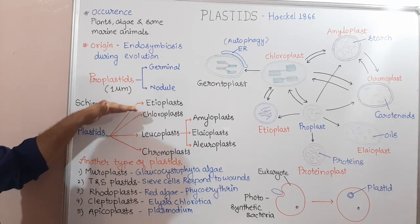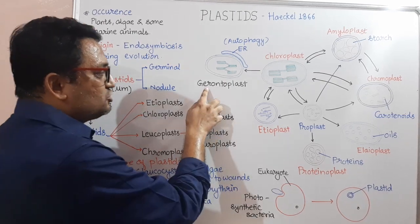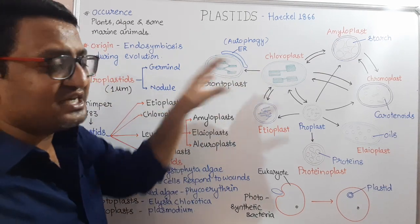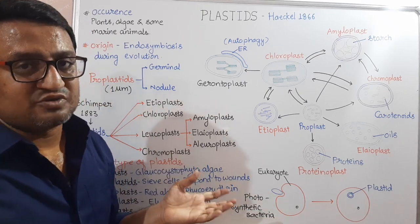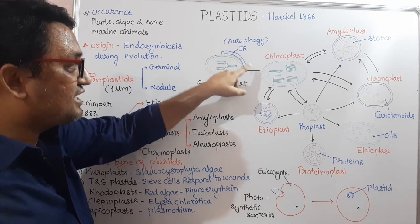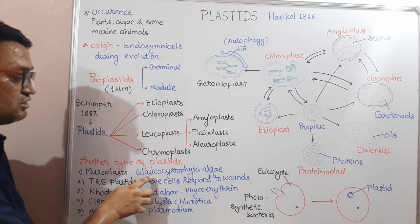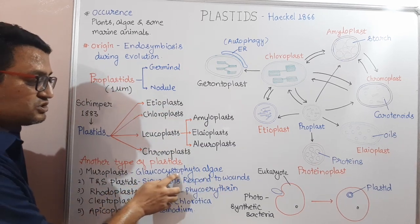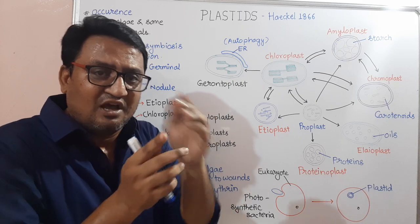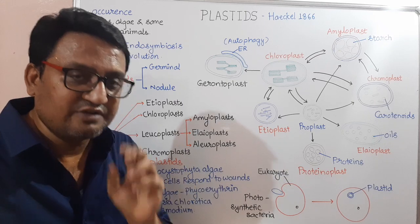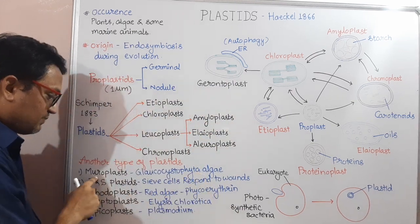Apart from Etioplasts, Chloroplasts, Leucoplasts, and Chromoplasts, some other types of Plastids are also present. Number one, Gerontoplasts — this is the degradation and dismantling of Chloroplasts during senescence, aging, or death of the leaf. During the death of the leaf, Chloroplasts undergo autophagy and get converted into Plastids called Gerontoplasts. Next is Muroplast, present in Glaucocystophyta algae. In this algae, in between the two membranes, a vestigial membrane called Peptidoglycan is present. Such Plastids are called Muroplasts.